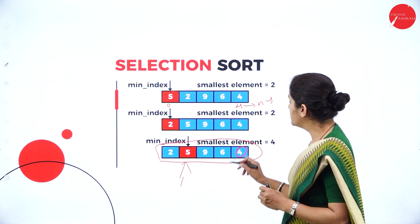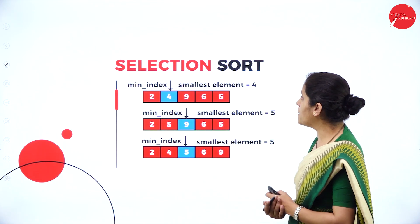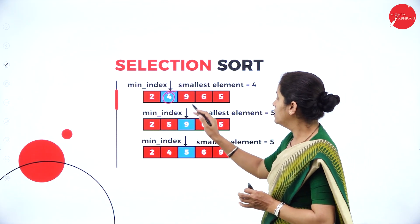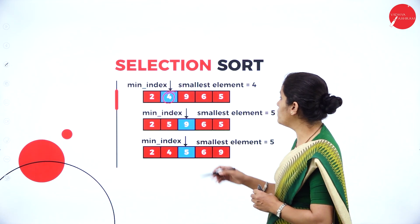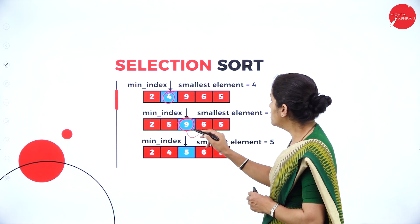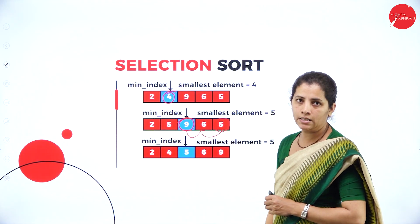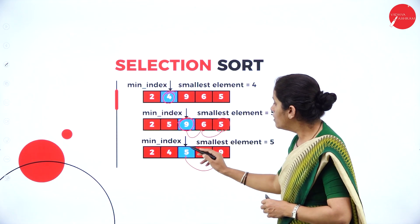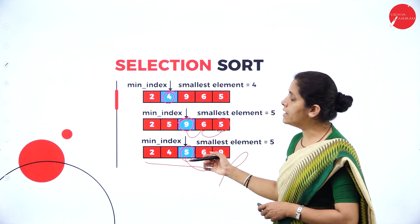Now looking at the remaining unsorted portion, the smallest element is 4. I swap 4 with 5, placing 4 at its correct position. I increment min index again. Now min index points to 9; I compare 9 with 6 and then with 5. The smallest is 5, so I interchange those elements. Now 5 is at its correct position and the array is fully sorted. That is how selection sort works.